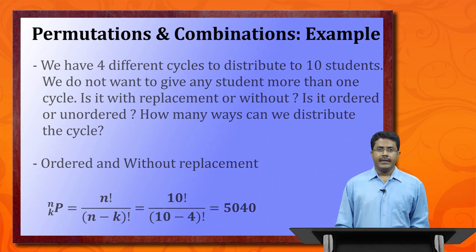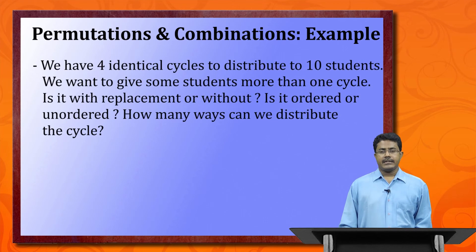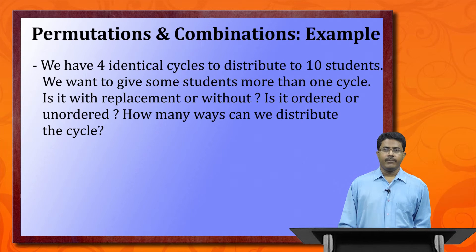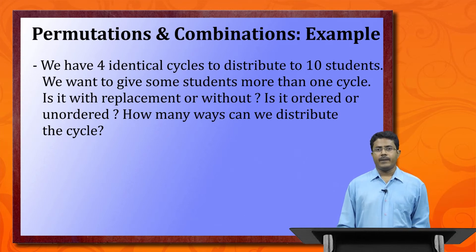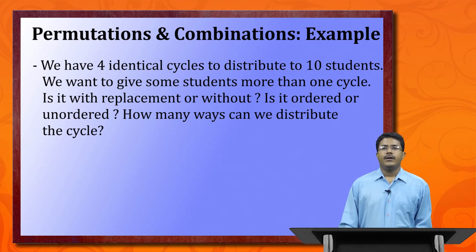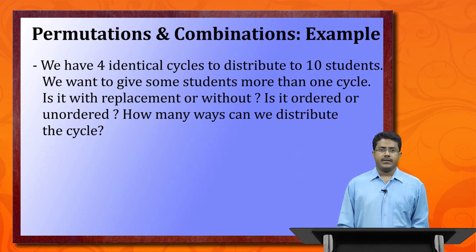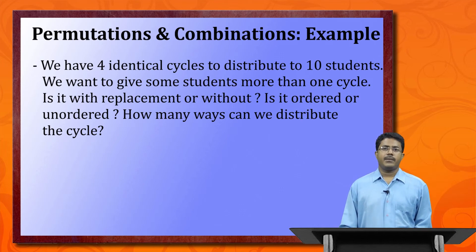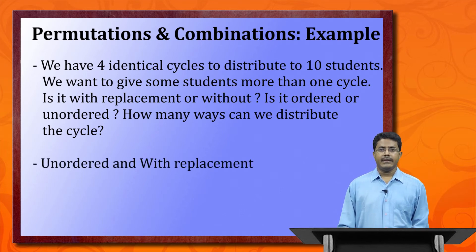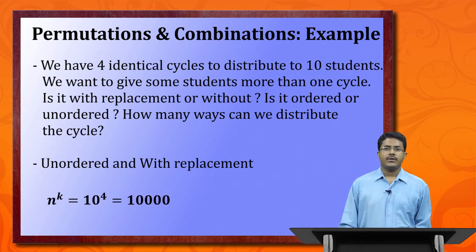Same example: 4 identical cycles, but now some students can get more than one cycle. Since cycles are identical, it is unordered. Since a student can receive more than one cycle, it is with replacement. We use n^k, giving 10,000 ways to distribute four cycles among ten students.